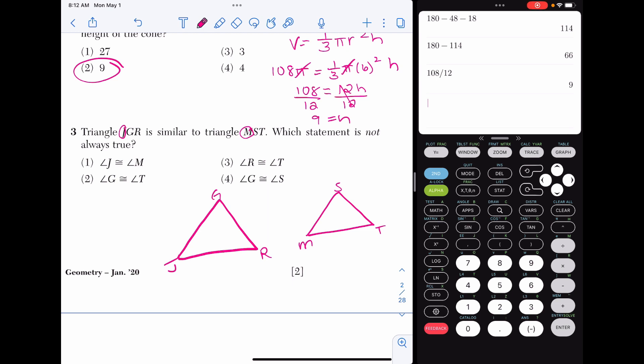Whenever you have similar triangles, the corresponding angles are congruent to one another. So choice one is saying angle J and angle M are congruent. That's true because they correspond to each other. Two is saying angle G and angle T correspond. That is not necessarily true because they do not match. They don't have matching locations. G and S are in the same location. So it is definitely choice two. Angle G and angle T are not necessarily congruent.